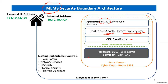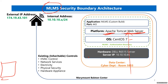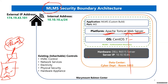From an external viewpoint: you are at home, you open your browser and type mlms.com. It passes through your home router, out to the internet, bounces through various providers, reaches Marymount's static IP, gets translated internally to the server at 10.10.10.45, and the application running on port 443 serves you the MLMS application.